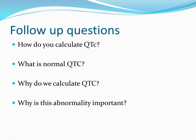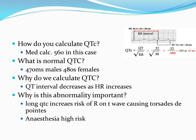For follow-up questions: how do you calculate QTc? What is normal QTc? Why do we calculate QTc? Why is this abnormality important? I would calculate the QTc using the MedCalc app — the formula is QT divided by the square root of RR interval in seconds. A QTc above 470ms in males and 480ms in females is abnormal. The QTc in this case is markedly prolonged at 562ms. We do this calculation as QT interval decreases as heart rate increases. A long QTc increases risk of R-on-T phenomena causing Torsades de Pointes, a polymorphic ventricular tachycardia that can lead to cardiac arrest and death. Anaesthesia is high risk for these patients.